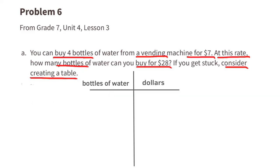The information tells us that you can buy 4 bottles of water for $7. And they'd like to know how many bottles of water you can buy for $28. Since 28 is 4 times larger than 7, then you can buy 4 times as many water bottles. 4 times 4 is 16. So with $28, you can buy 16 bottles of water.